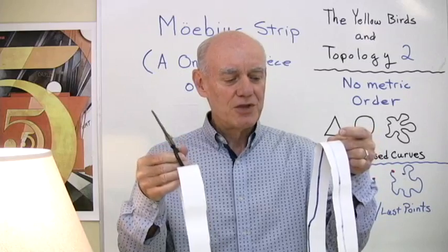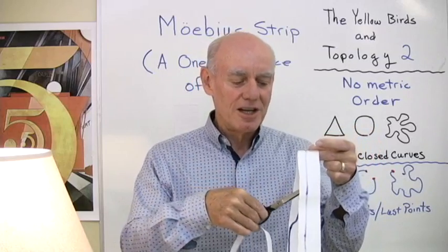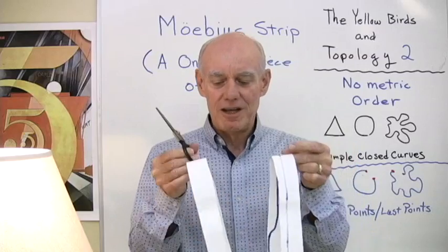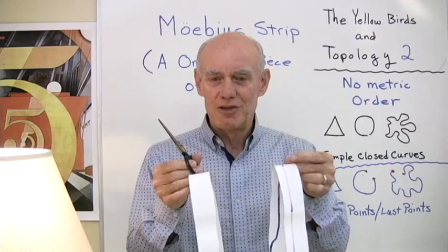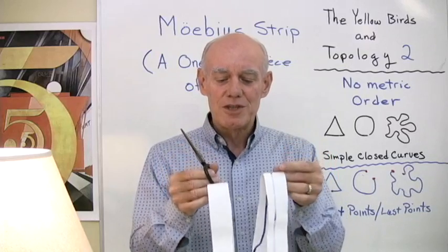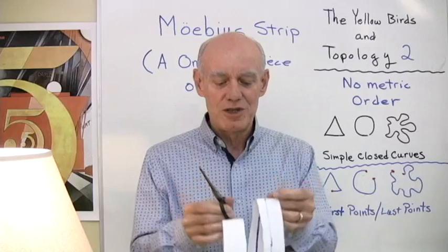So if I have two sides, I can't get from one side to the other side without crossing an edge. And if I have two edges, I can cut between them and get two pieces of paper. So that was a two-sided, two-edged piece of paper.